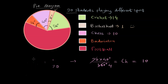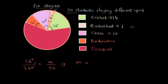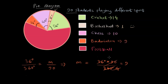Now let's solve for badminton. The orange sector subtends 36 degrees at the center. So 36/360 = M/90. Multiplying both sides by 90, we get M = 36 × 90 / 360, which equals 9. So 9 students play badminton.